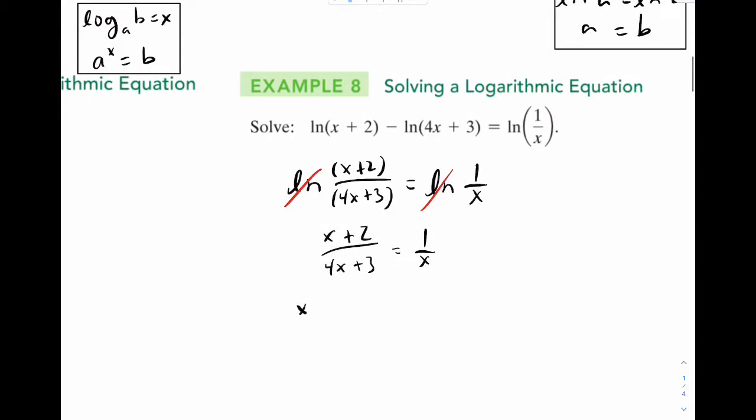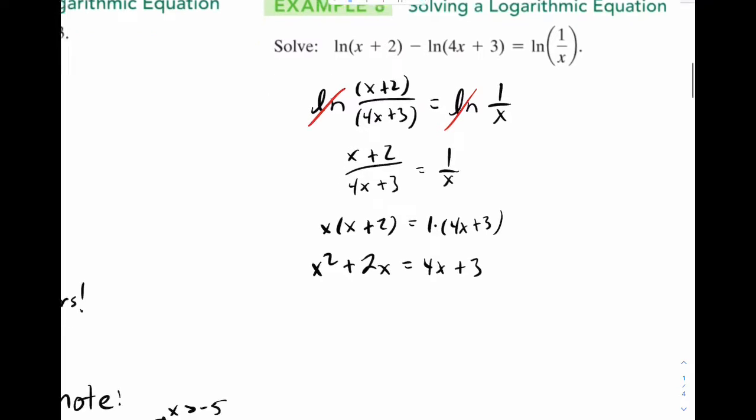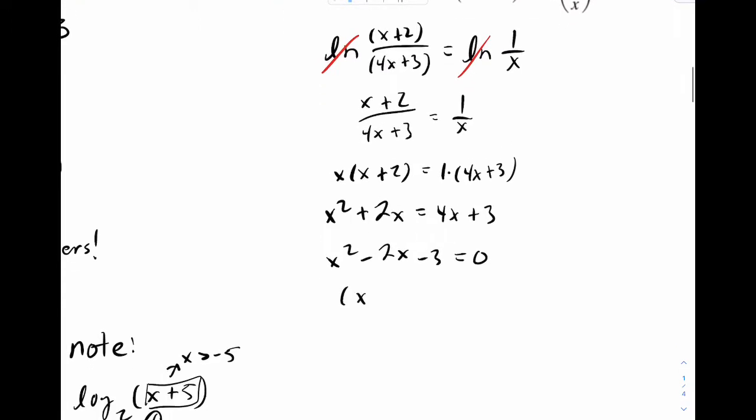Let's cross multiply. So x times x plus 2 should equal 1 times 4x plus 3. And from here it's just algebra. So we'll just keep going. x squared minus 2x minus 3. That's equal to 0. And once again, we factor and x is equal to 3 or negative 1.